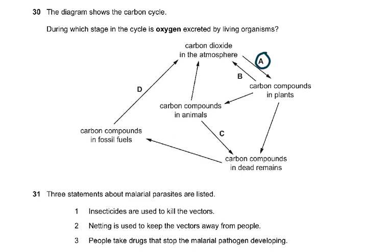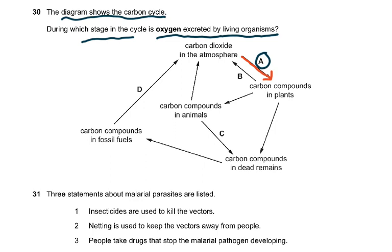Question 30: the diagram shows a carbon cycle — during which stage is oxygen excreted by living organisms? Excreted means removal of toxic or waste materials. Oxygen is excreted only in the process of photosynthesis — from carbon dioxide in the atmosphere to carbon compounds in plants — because oxygen diffuses out of the stomata through the leaves. The answer was A. Many candidates confused plant respiration and photosynthesis, as noted in the exam report. Candidates had to read this question carefully since the diagram showed the carbon cycle but the question referred to oxygen excretion.